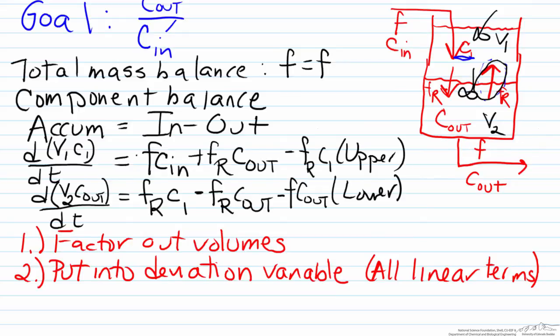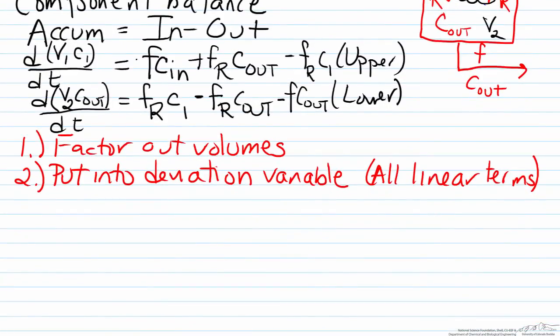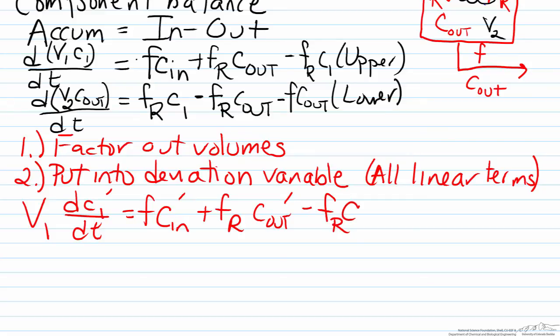By doing this we're left with V_1 times dC_1'/dt equals F times C_in' plus F_R times C_out' minus F_R times C_1', and this is for the upper portion of the tank. For the lower portion it will be something very similar.